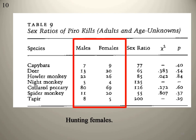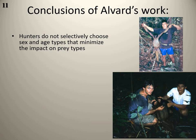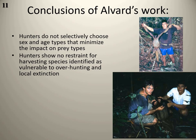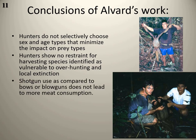Hunters hunt in the most efficient manner possible. They are not intentional noble ecological savages or conservationists. Some basic conclusions of Alvard's work: hunters do not selectively choose sex and age types that would minimize impact on prey populations. Hunters did not show restraint in harvesting species identified as vulnerable to over-hunting or local extinction in the area. Also, when he looked at shotgun use compared to bow and arrow or blowguns, he found that shotgun use did not lead hunters to kill or consume more meat than they would have using more traditional technology.